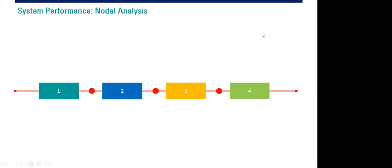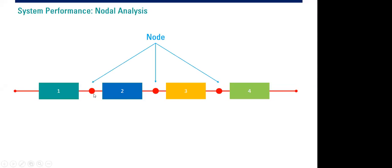This is a schematic. Let's say we have a system consisting of these blocks — block one, two, three, and four. Four components or four elements. And between each block, we have an intersection, an interface, or we can also say we have a node. This is the node itself, and it is the source of the word 'nodal.'